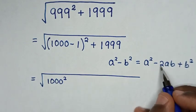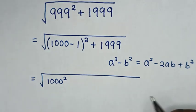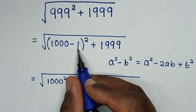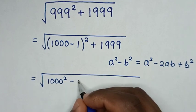Then from negative 2ab, it will be negative 2 times a is 1000 times b is 1, so it will be negative 2000.